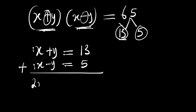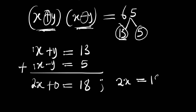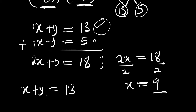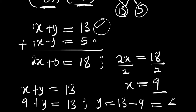Adding the two equations, we get 2x, and positive y plus negative y gives 0, so 2x equals 18. Dividing both sides by 2, we get x equals 9. From the first equation, x plus y equals 13, substituting x equals 9 gives 9 plus y equals 13, so y equals 13 minus 9, which equals 4. Therefore x equals 9 and y equals 4.